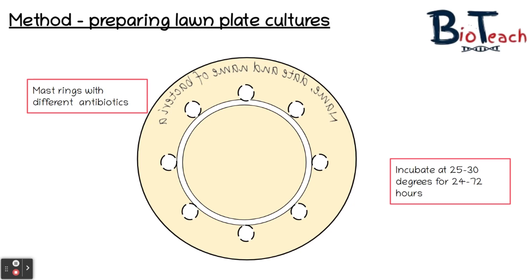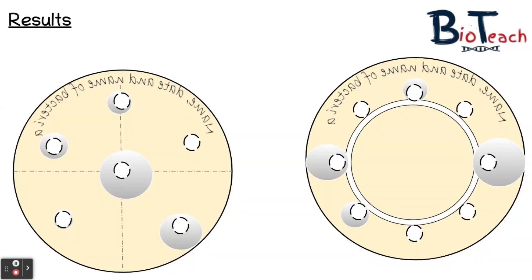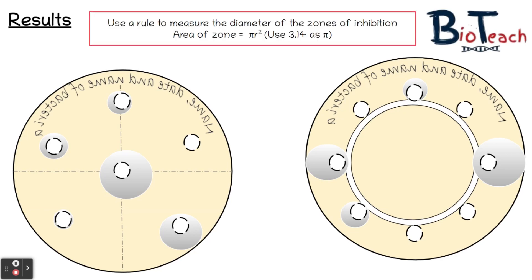Make sure when you put them in the incubator you place them upside down, because condensation may form and you don't want it dripping onto your agar as that could affect your results. After 24 to 72 hours you may have a plate showing grey circles around the discs or mast ring — these represent the zone of inhibition, which indicates the potency of each chemical or concentration used. Use a ruler to measure the diameter of the zones of inhibition, then calculate the area using π r² (using 3.14 as π). The larger the zone of inhibition, the more effective that particular antimicrobial or antibiotic.